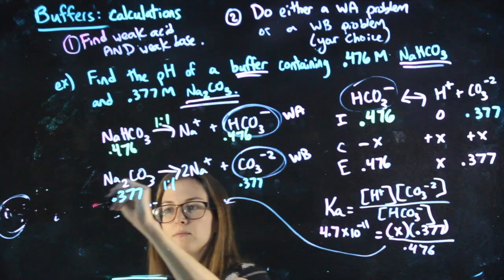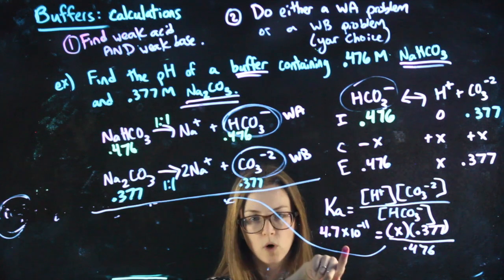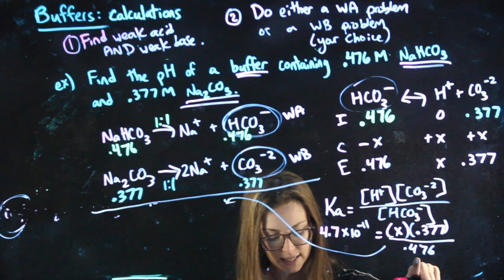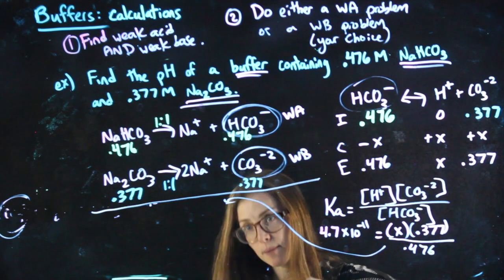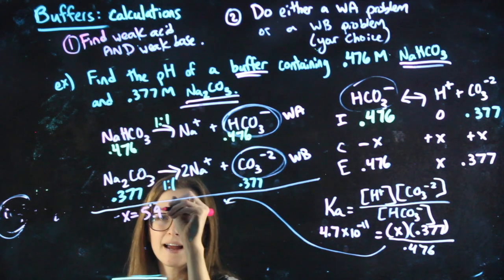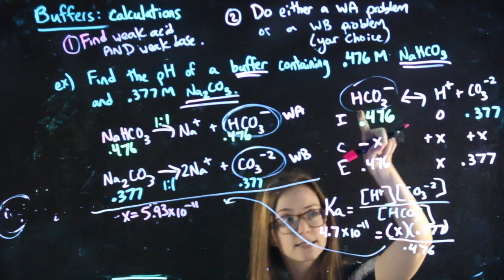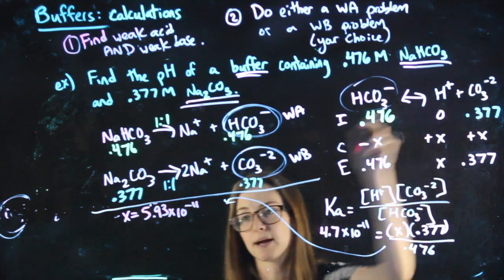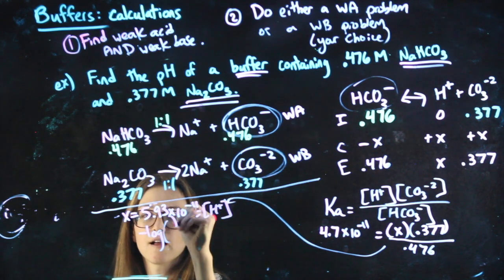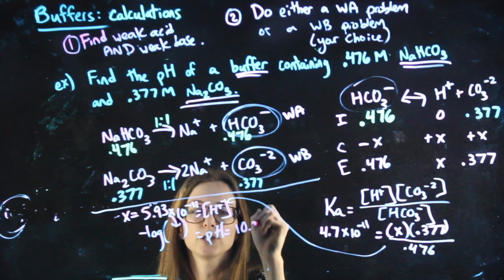I'm going to move over here so I have more room. If the math confuses you, put this over 1 and cross-multiply. 4.7 times 10 to the negative 11 times 0.476 divided by 0.377. I get an X value of 5.93 times 10 to the negative 11. And because I did a weak acid problem, my X represents my H+. So if I want to find the pH, I just negative log that H plus value and get 10.23.